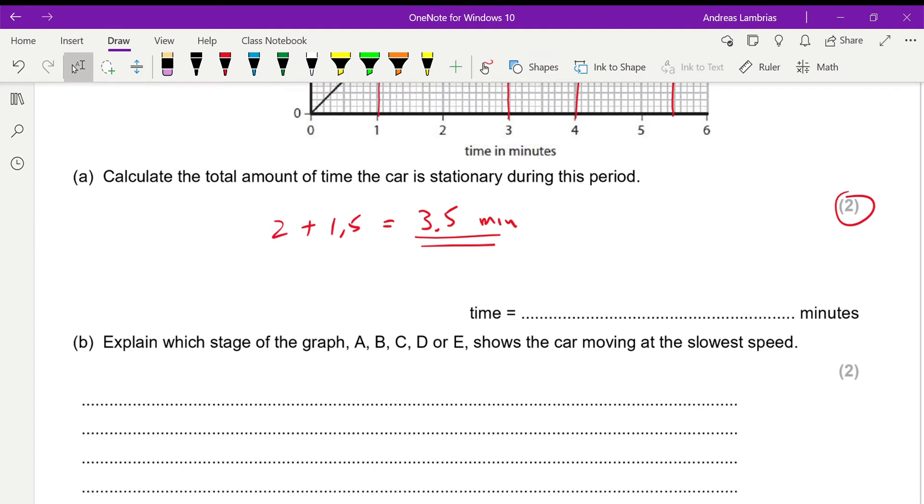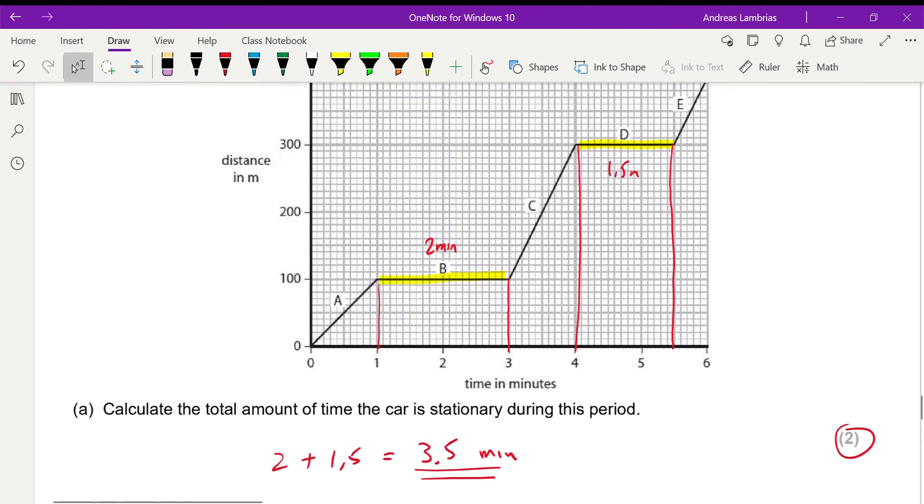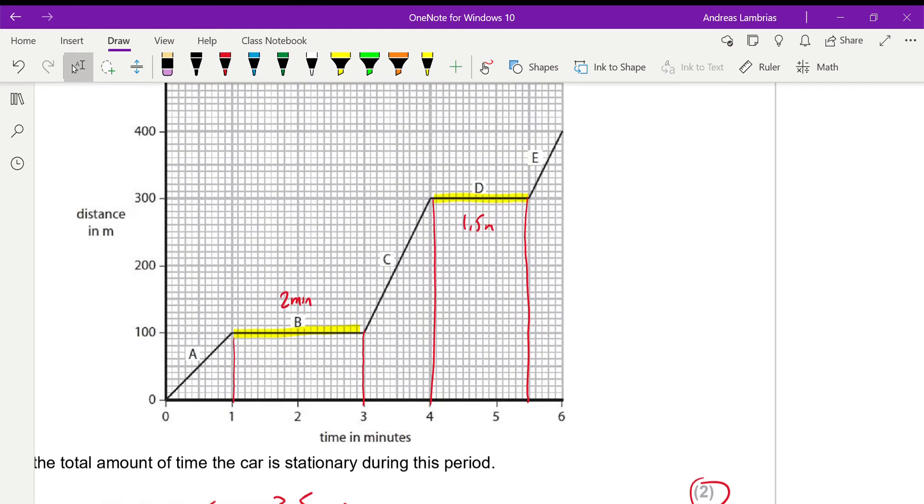Explain which stage of the graph A, B, C, D, or E shows the car moving at the slowest speed. We have already mentioned about the gradient, so on a distance-time graph the gradient shows the speed.